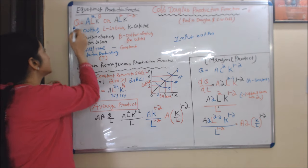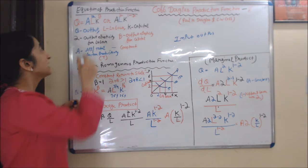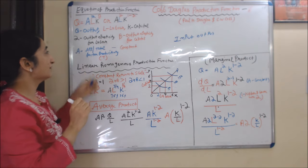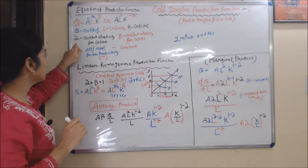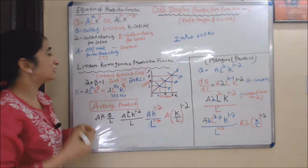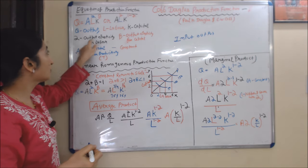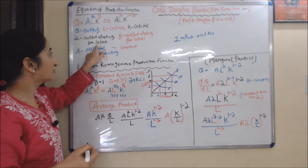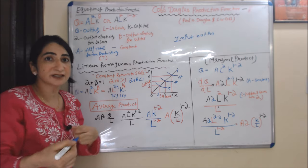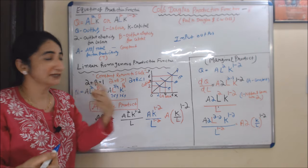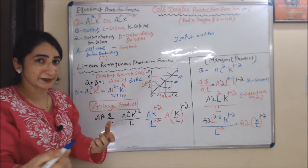In this equation, Q is your output, L is your labor, and K is your capital. Alpha (α) is the output elasticity for labor, and beta (β) is the output elasticity for capital.